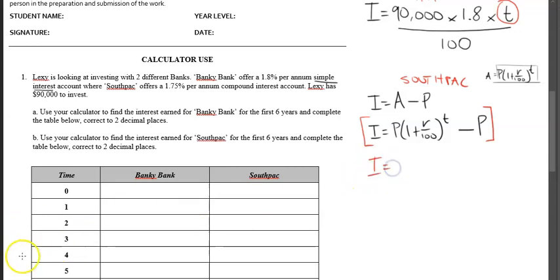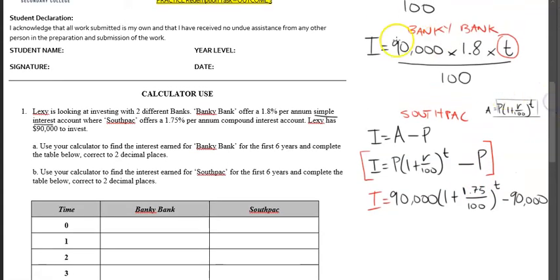So our I is equal to what the principal is. Again, this doesn't change: 90,000 times (1 plus—now be careful, the rate for SouthPac is 1.75. Some students will sometimes put 1.8 just out of habit because they see that percentage there, but it's with a different bank. So you've got to put 1.75. The T, the time frame, is the thing that varies, so we're just going to leave it as T for now. And we're going to subtract that principal amount again. Now, obviously, we're anticipating this amount here to be greater than $90,000 as this T number changes. Now that we've got our two specific formulas, we're going to put this into our calculator.